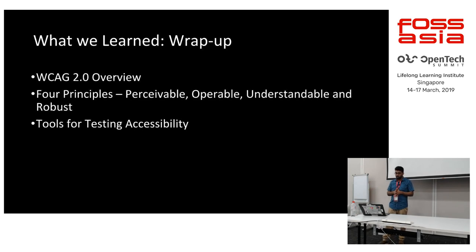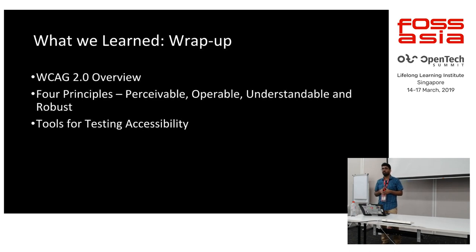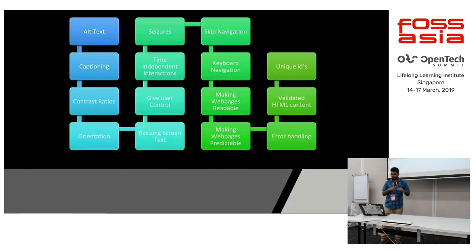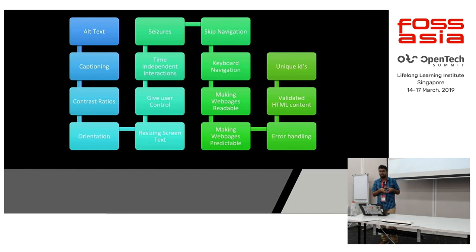Quick wrap-up of what we learned: WCAG 2.0 overview, why it is important, the four principles — Perceivable, Operable, Understandable, and Robust — and the tools for accessibility testing. The principles in timeline order include: alt text, captioning, contrast ratios, orientation, seizures, time-independent interactions, giving user control, resizing text, skip navigation, keyboard navigation, making websites readable and predictable, unique IDs, validated HTML content, and error handling.